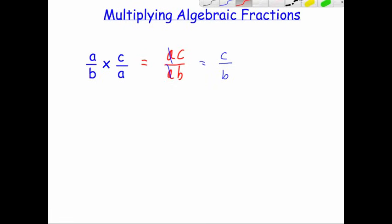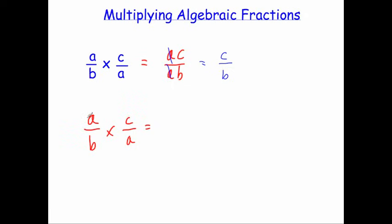Let's have a look at how to do it by cancelling down before you multiply. So if you've got A over B times C over A, because you've got A on the numerator and A on the denominator, you know you're going to be able to cancel out the A's. So if you've got terms that will cancel — one on the numerator and one on the denominator — you can cancel them out before you multiply. A divided by A leaves one, so one times C is C and B times one is B. You can cancel out before you multiply and get the same answer.